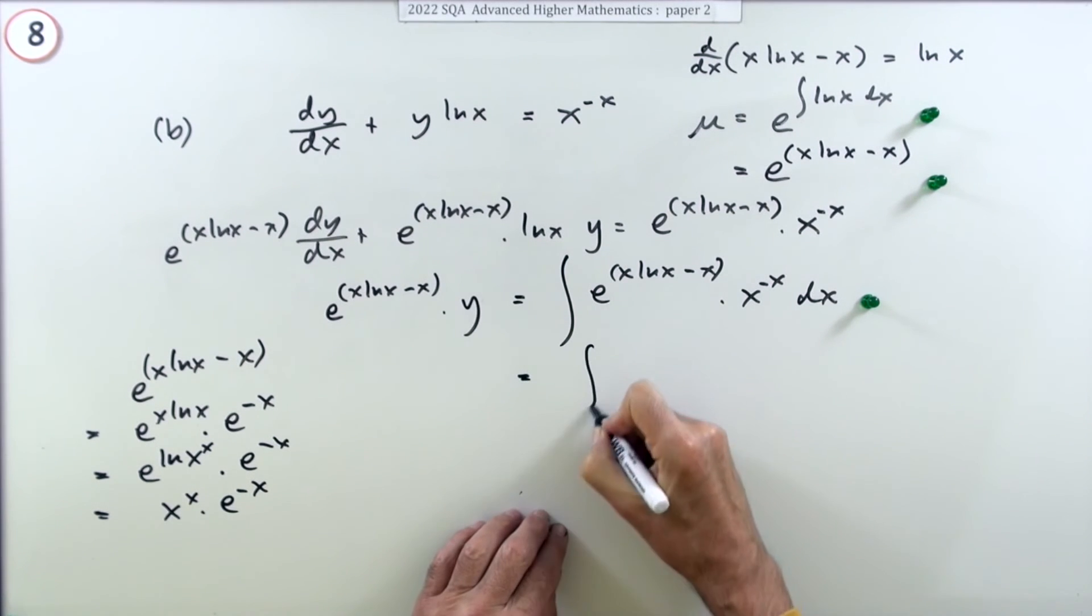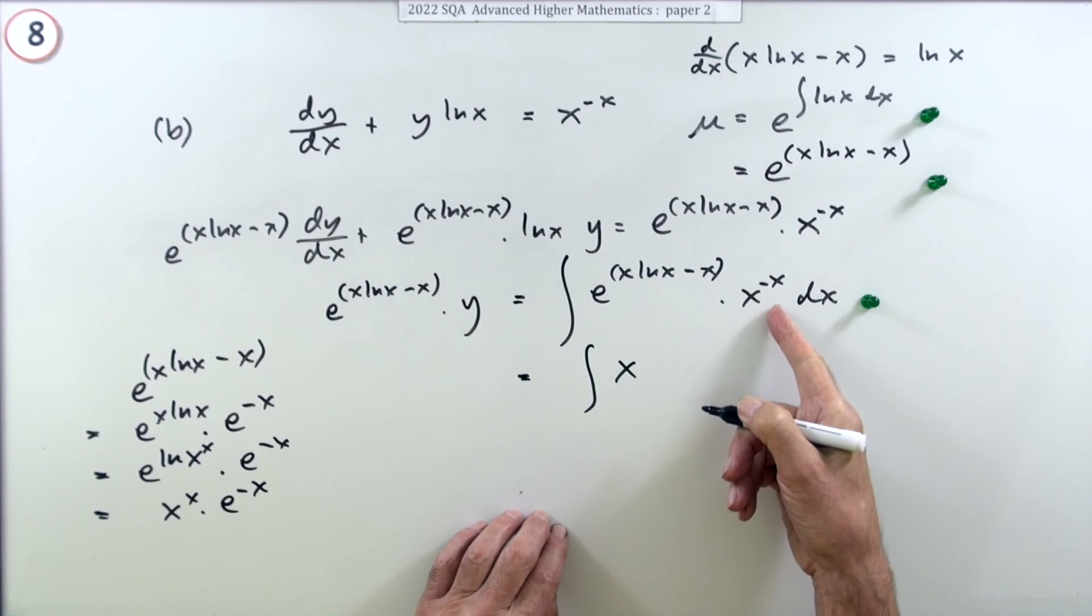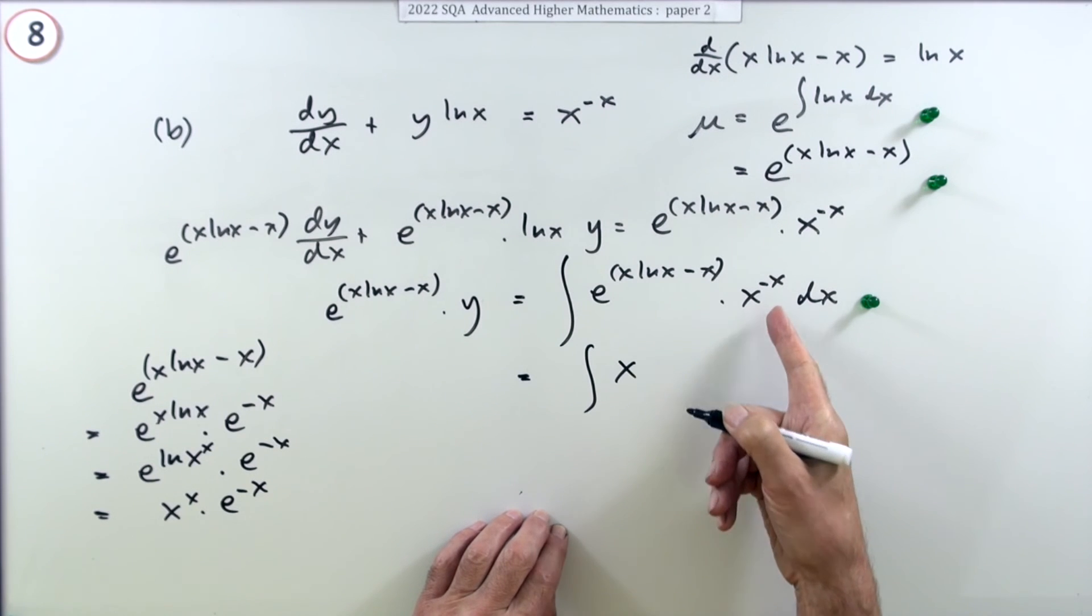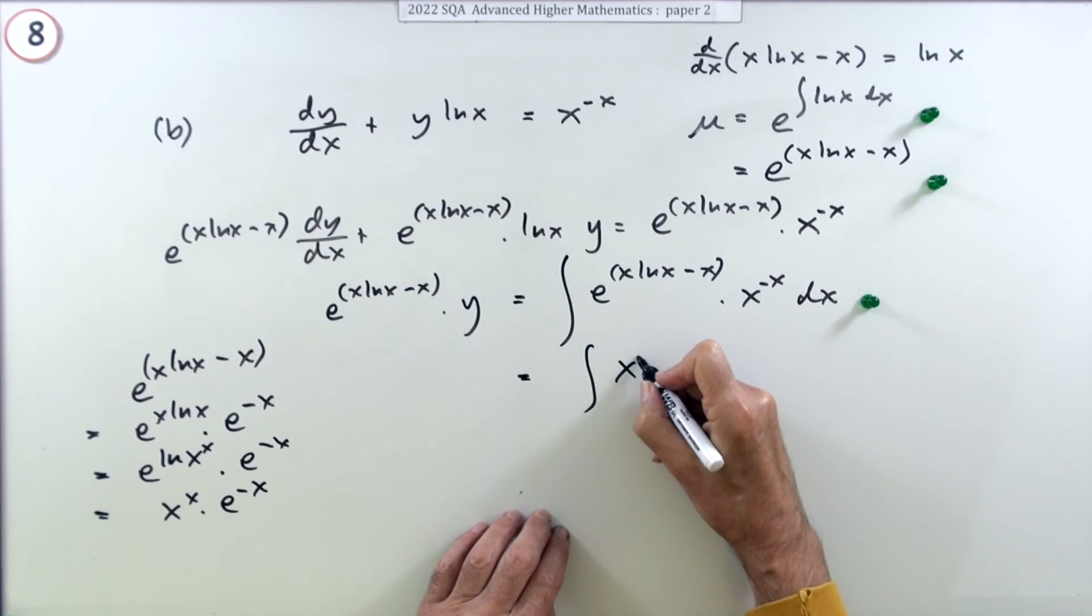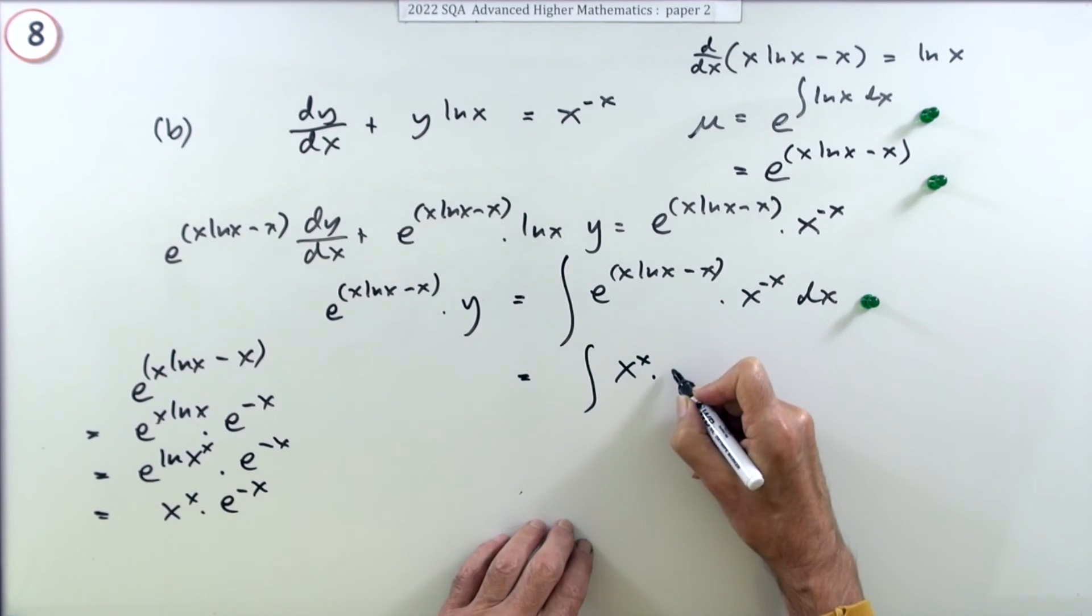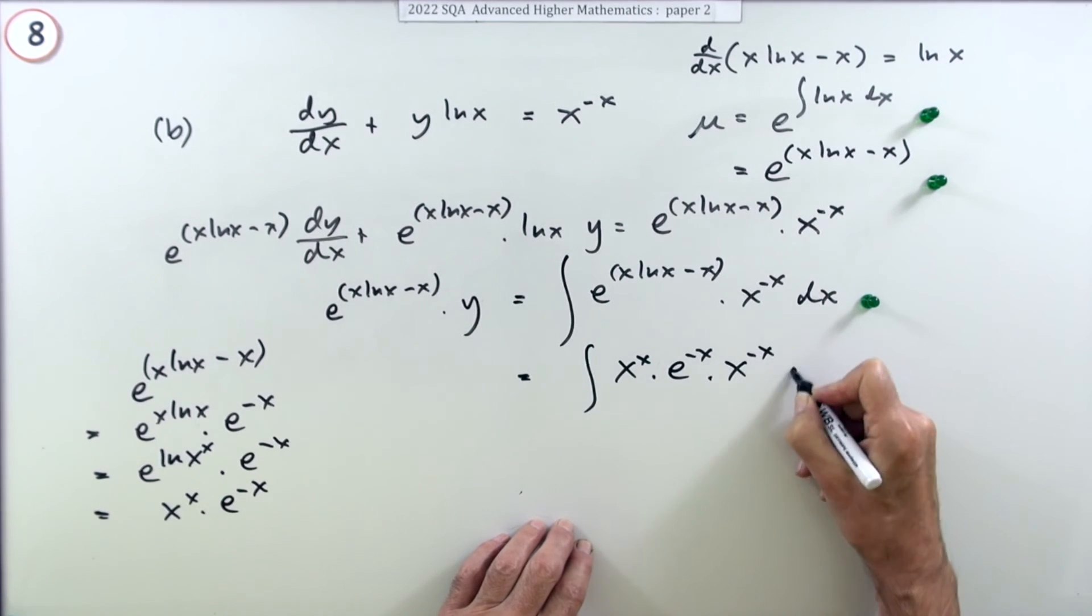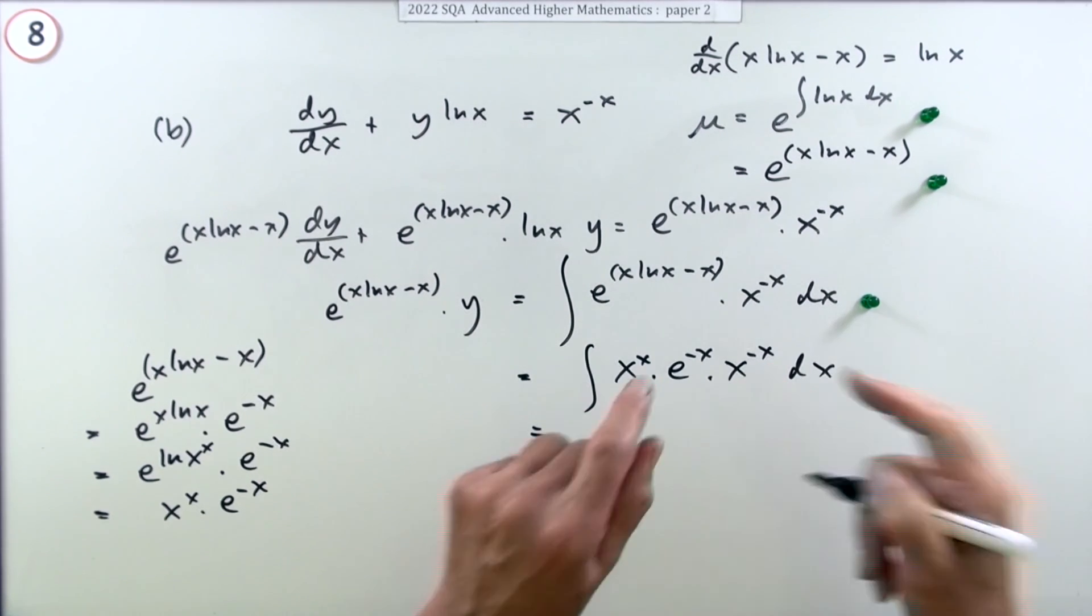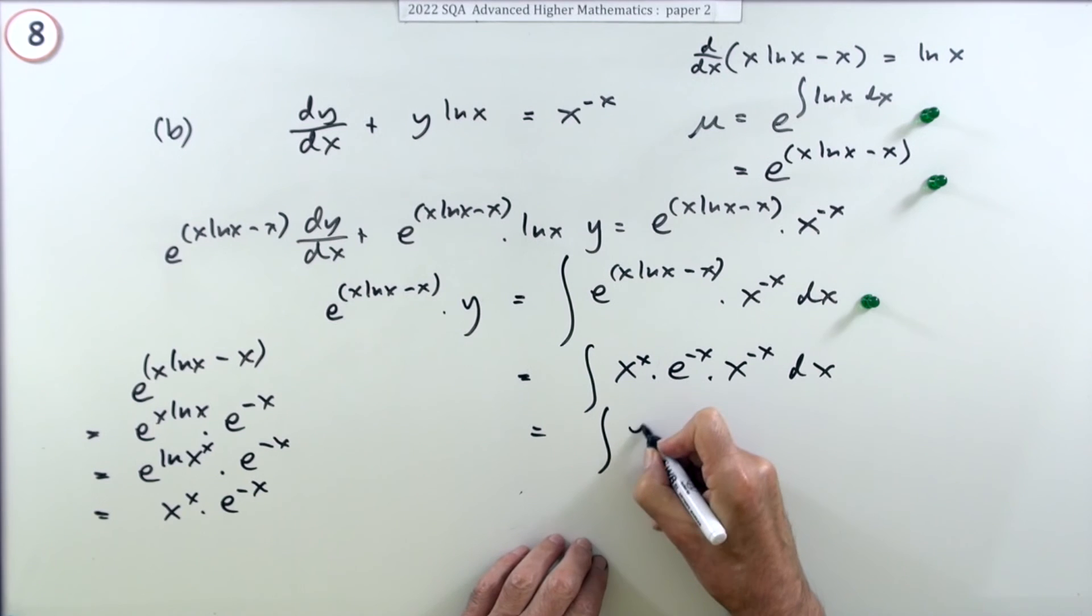Right, I could put that in here. So that's equal to the integral of, because that was a nasty looking wee thing wasn't it, that probably scared you. But here it's going to disappear because I've got x^x * e^(-x) * x^(-x) dx. So they cancel out and you're just left with this wee simple integral.